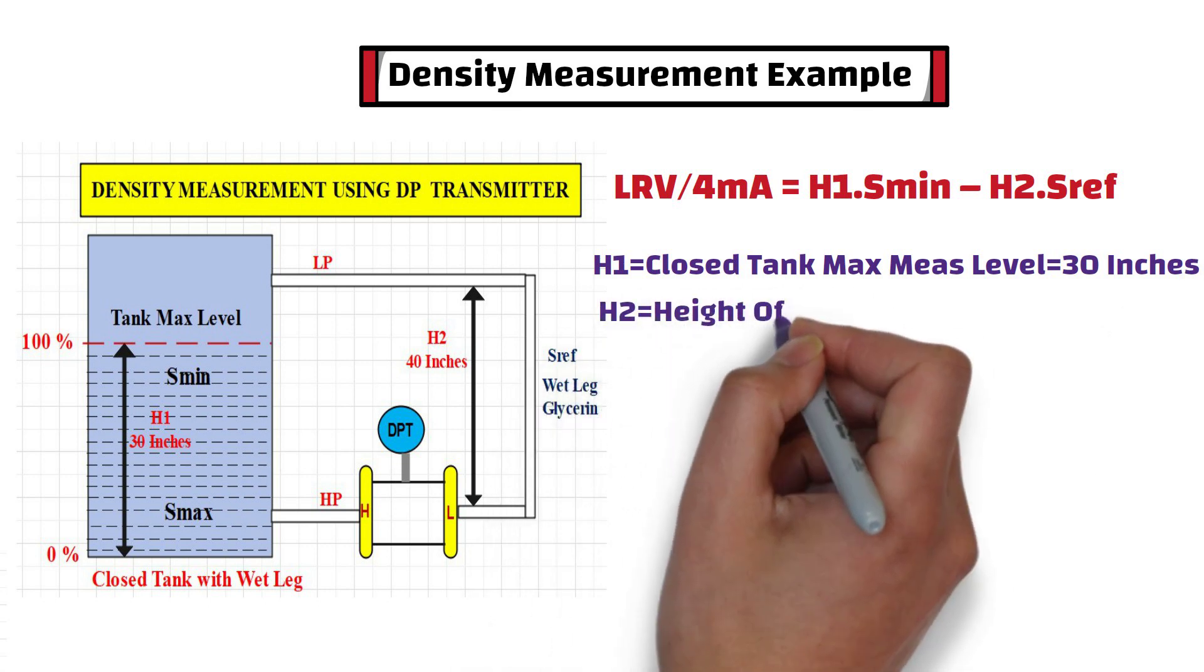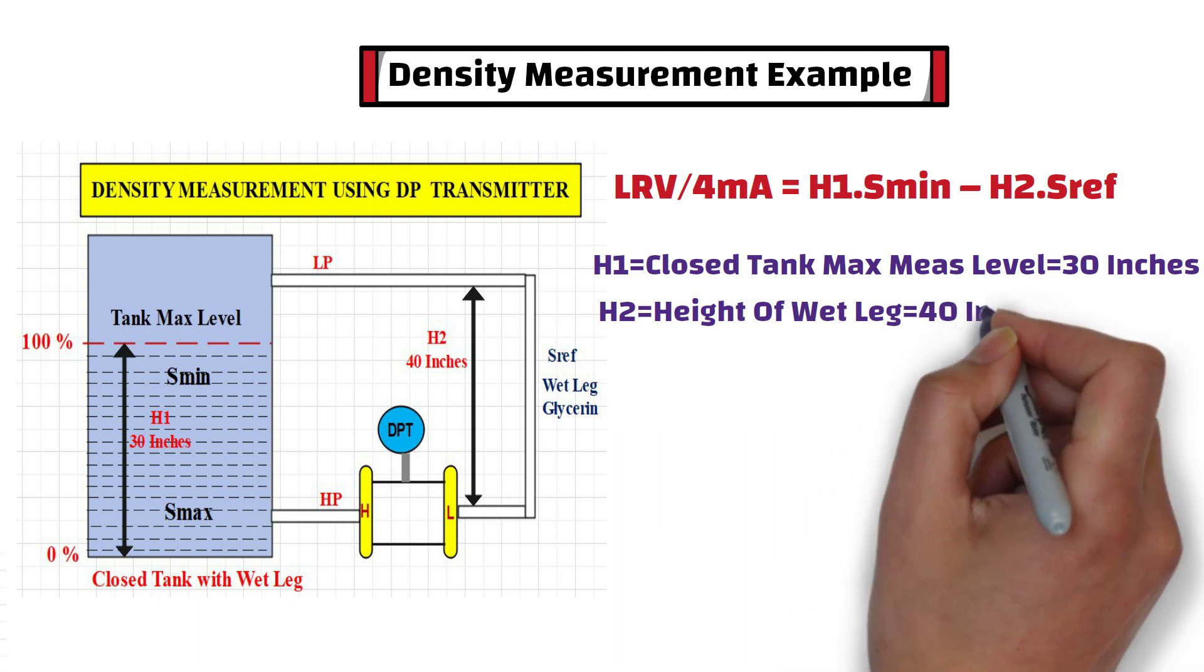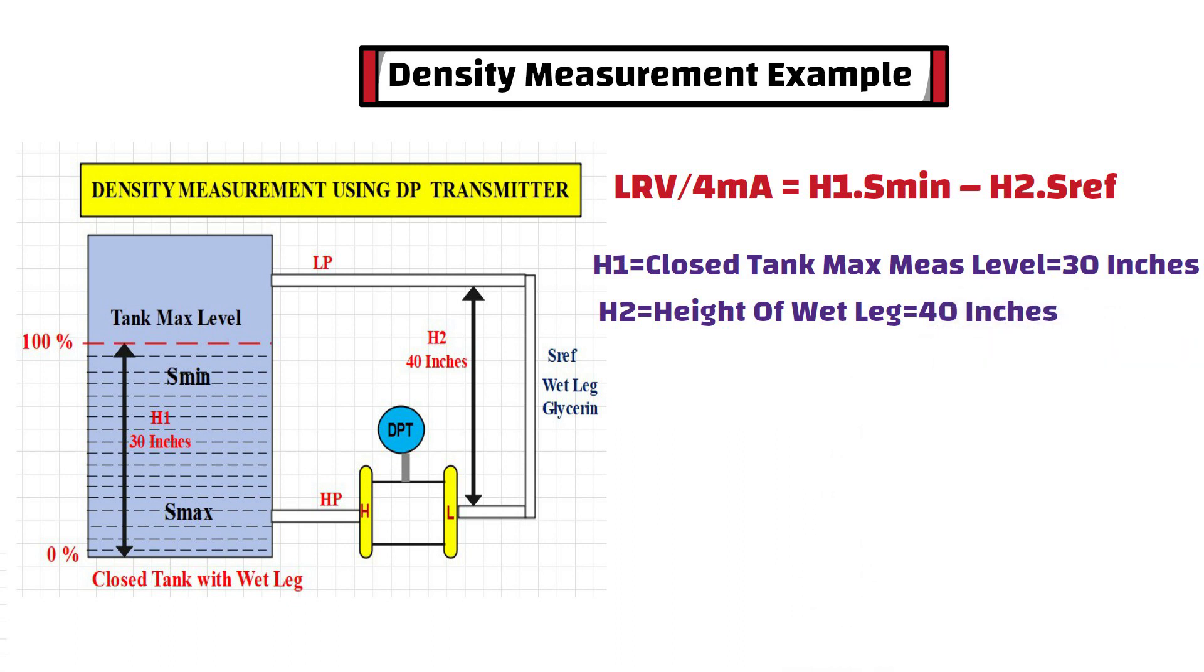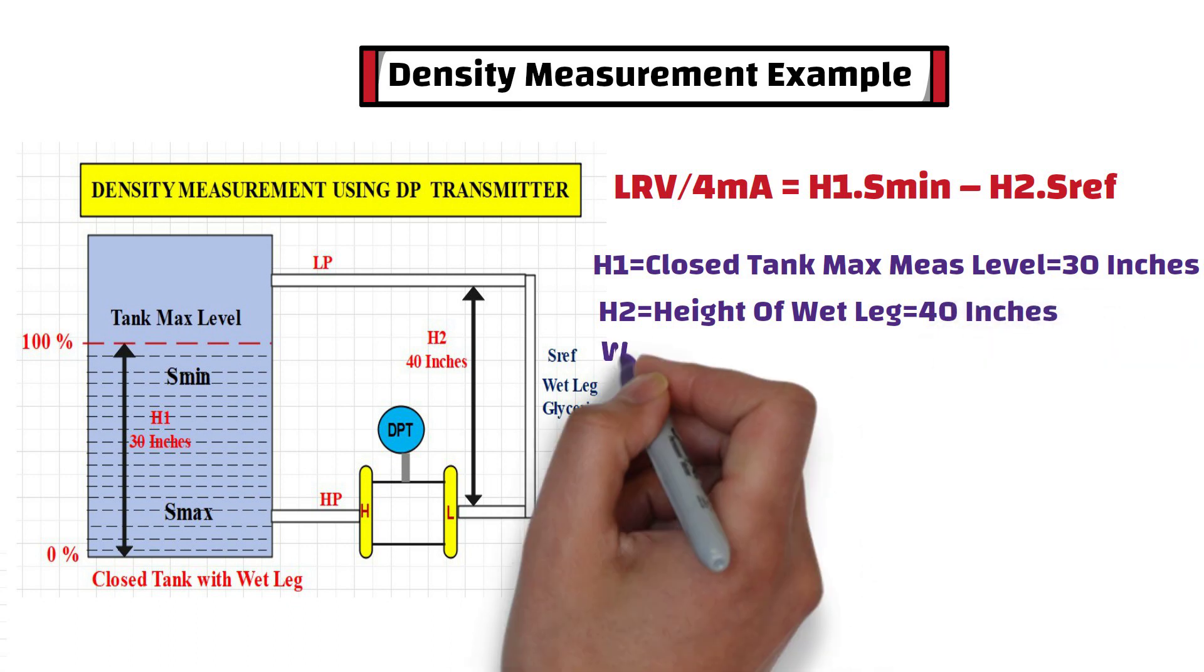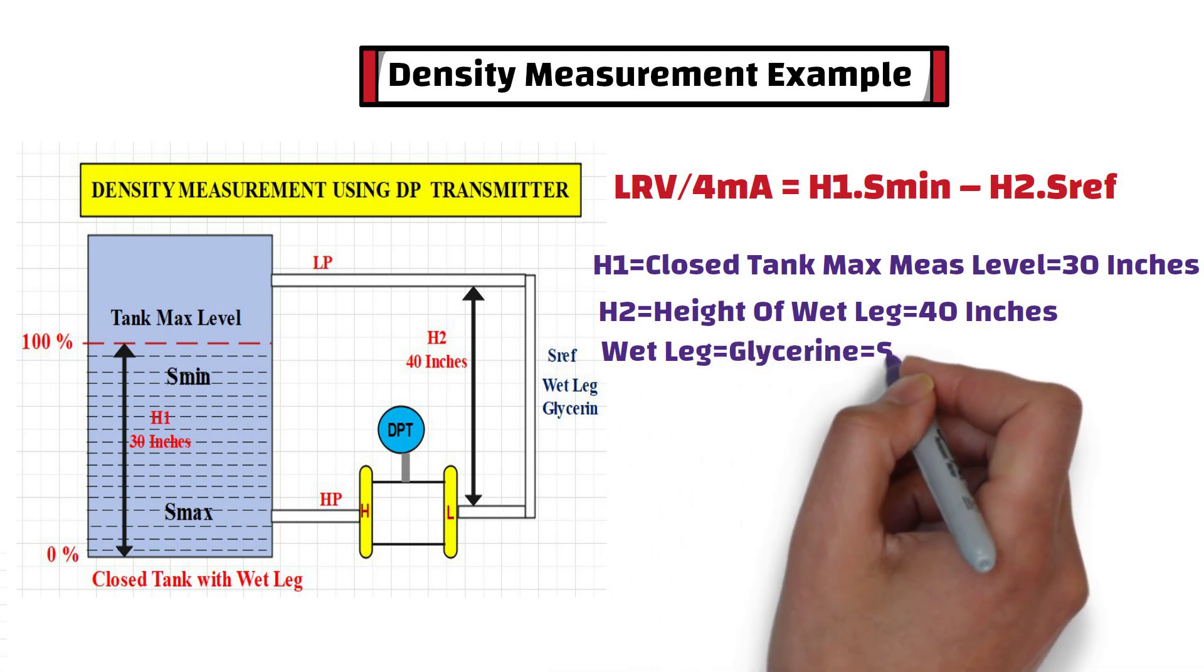H2 is the height of wet leg. In this example, wet leg's height is 40 inches. The wet leg is filled with glycerin, and its specific gravity is 1.263.